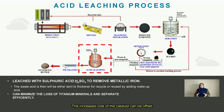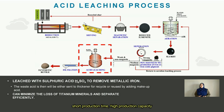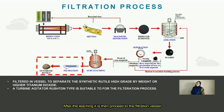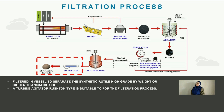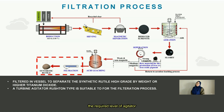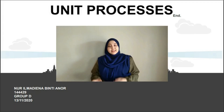The increased cost of catalyst can be offset by advantages such as short production time, high production capacity, and low power consumption. After leaching, the product proceeds to a filtration vessel to separate the synthetic rutile, grading 92% by weight or higher in titanium dioxide. A turbine agitator (Rushton type) is suitable for achieving the required agitation and impeller speed needed for this filtration process.